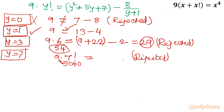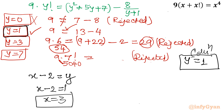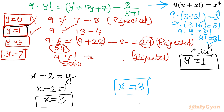Now let's substitute back. Our substitution was x minus 2 equal to y, and the accepted solution is y equal to 1. So x minus 2 equals 1, giving x equal to 3. Let's verify: putting x equal to 3 in the original equation gives 9 times 3 plus 3 factorial, which is 9 times (3 plus 6) equals 9 times 9 equals 81, and 3 to the power 4 is also 81. So 81 equals 81, confirming that x equal to 3 is our true and correct solution.